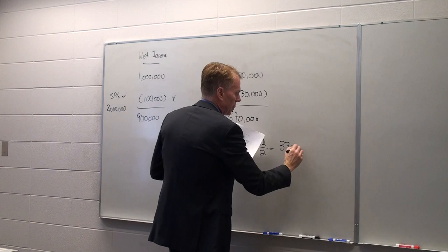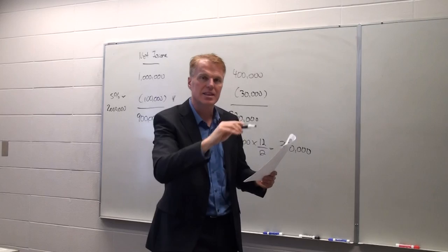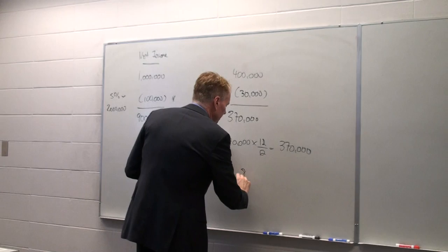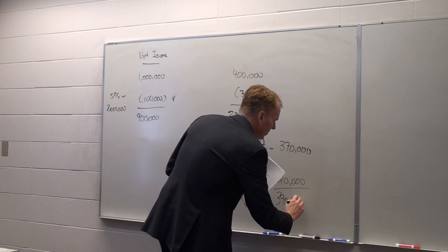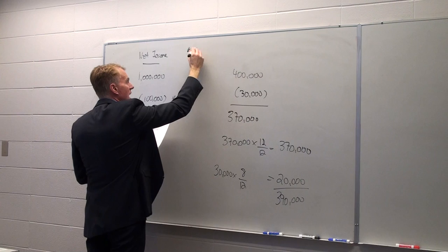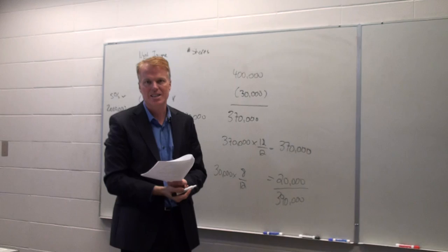So 370,000 was outstanding for the entire year. And 30,000 was outstanding for eight months of the year. Remember the first four months, it was a bond. The last eight months, it was common shares. So 30,000 times eight twelfths means that we have 20,000 outstanding shares. So that's a total of 390,000. So our basic EPS is $2.31.